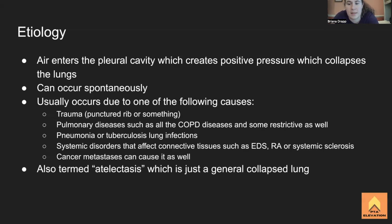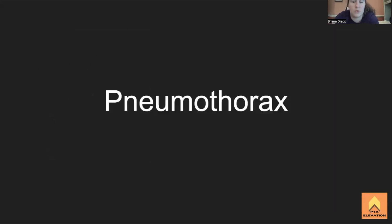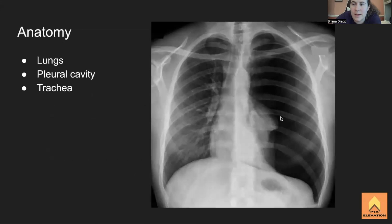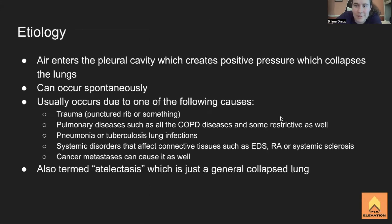The word pneumothorax breaks down as 'pneumo' meaning air and 'thorax' meaning the chest — so literally air in the thorax. You can also have a hydrothorax (water in the thorax) or a hemothorax (blood in the pleural cavity). Essentially anything increasing pressure on that side of the lung can cause it to collapse, since lungs require negative pressure to stay inflated.